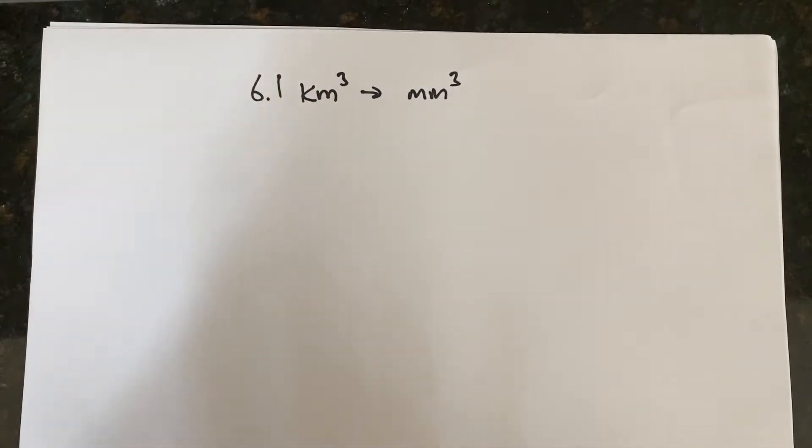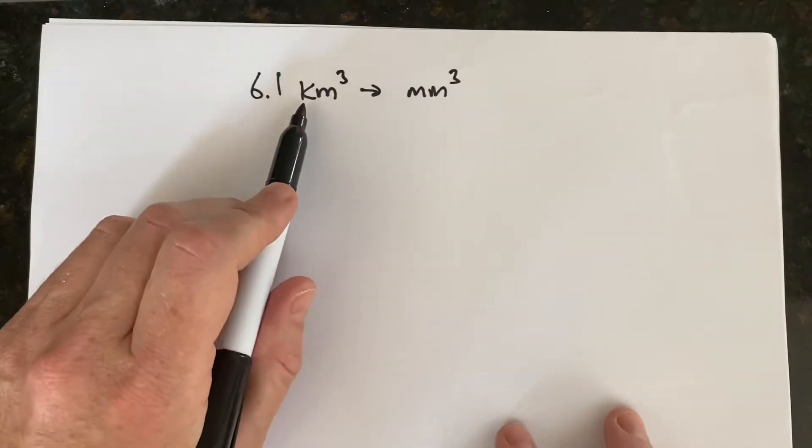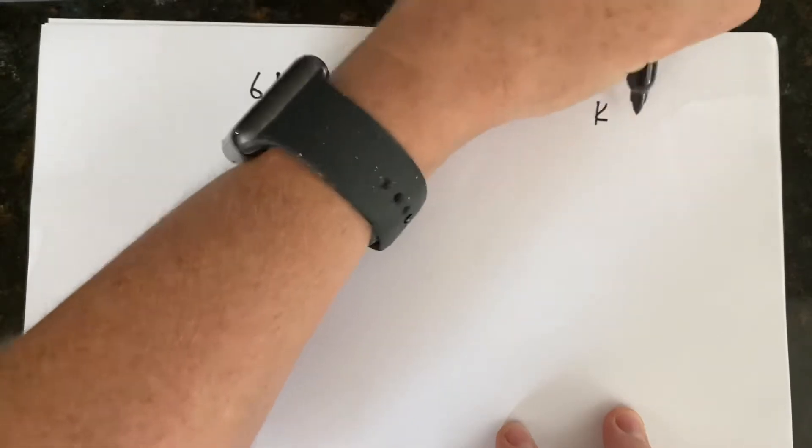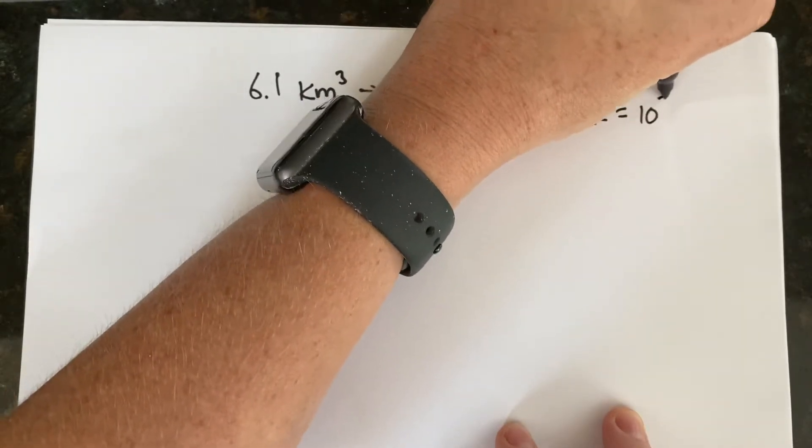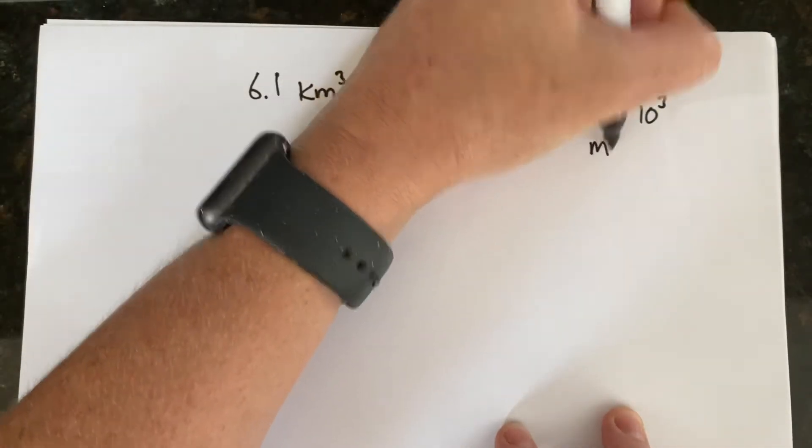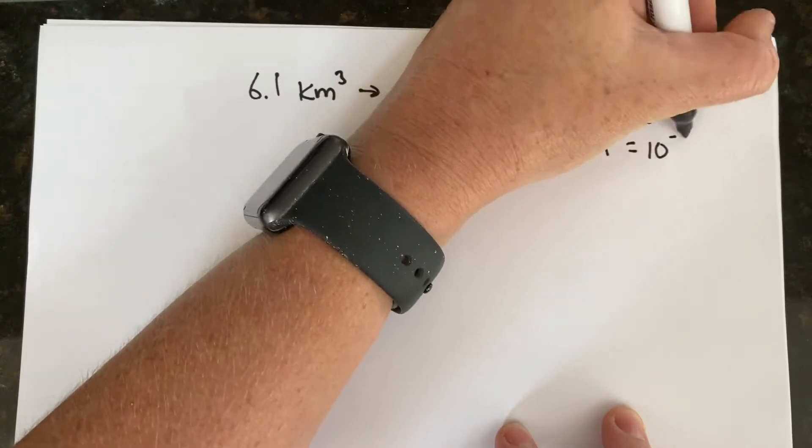Okay, so the two conversions that we'll need to know are kilo and milli. Kilo is equal to 10 to the third, and milli is equal to 10 to the negative third.